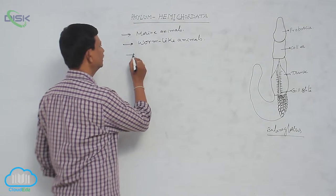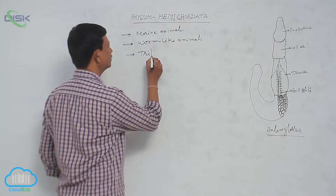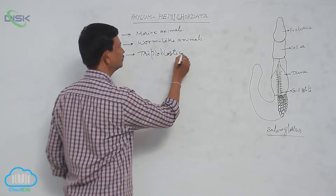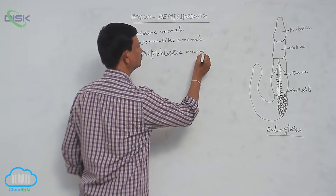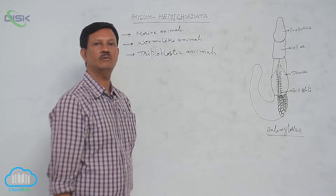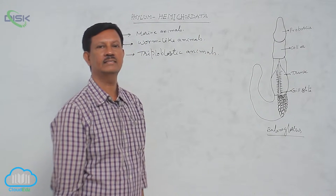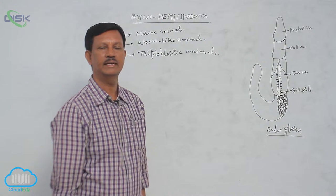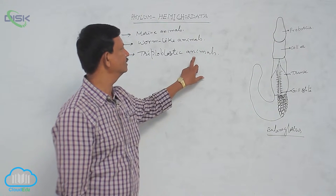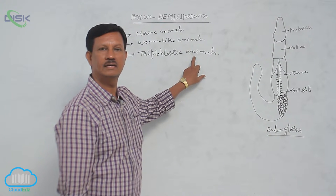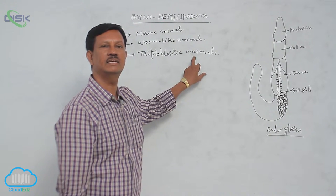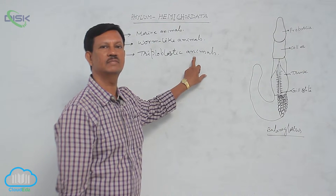They are triploblastic animals, meaning there are three primary germ layers: ectoderm, endoderm, and mesoderm. These three layers are present during development and gradually develop into the different systems of the body.